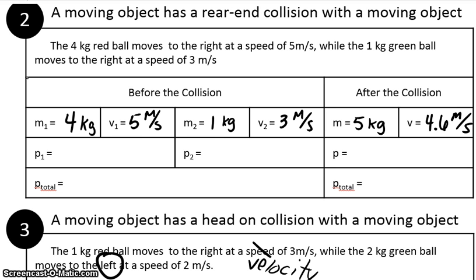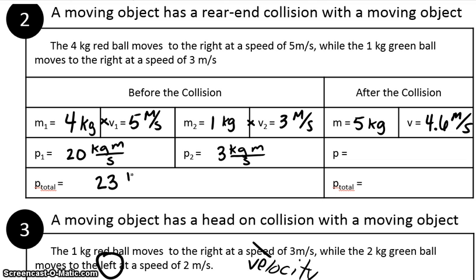Let's look at scenario 2. We have a 4 kilogram red ball moving to the right at 5 meters per second, and a 1 kilogram green ball moving to the right at 3 meters per second. We calculate the momentum of each individual object first: 4 times 5 is 20 kilogram meters per second, and 1 times 3 is 3 kilogram meters per second. Adding those together gives us 23 kilogram meters per second.